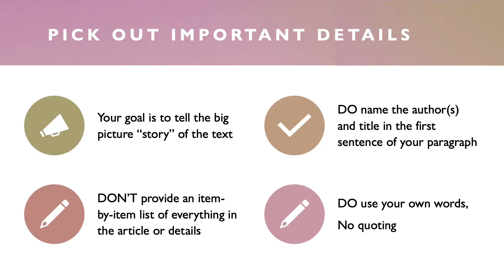The very first thing you need to think about when writing a summary is picking out the most important details. Your goal is to tell the big picture story of the text — the gist of what it's about, the main ideas. It's not to provide an item-by-item list of everything in the article. You do want to name the author and the title in the first sentence of your paragraph, and that makes it clear that you are summarizing somebody else's ideas.